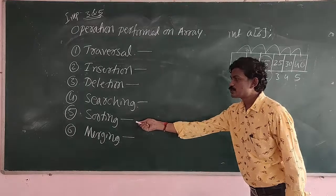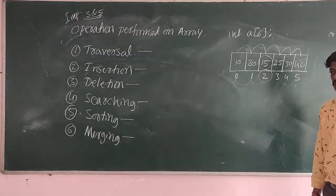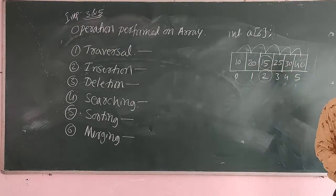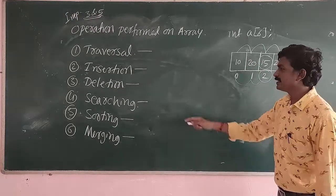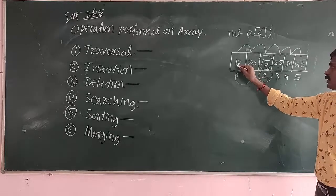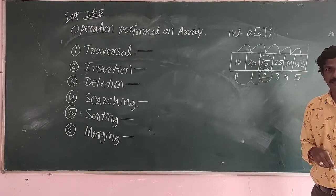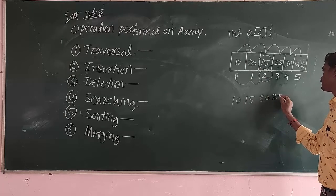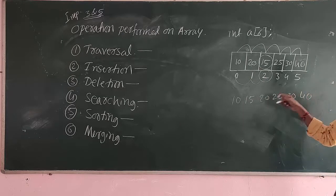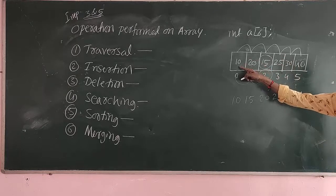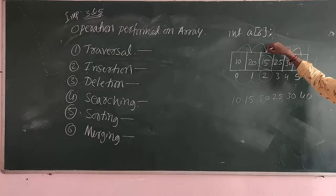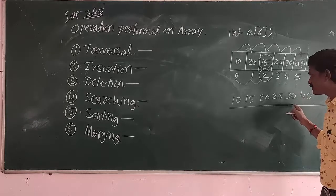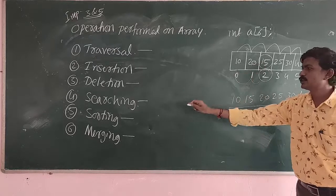The next one is sorting operation. Sorting is a technique which reorganizes the elements of a given data structure in a particular order — either ascending or descending. For example, if I have certain elements and I organize them into ascending order: 10, 15, 20, 25, 30, 40 — that is called a sorting operation. It reorganizes the elements into a particular order, either ascending or descending.